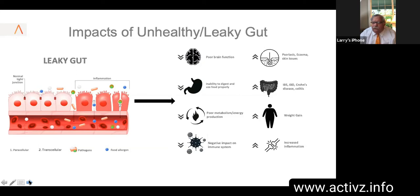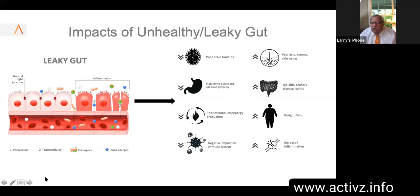We want your cells to look like those on the left of the screen. Leaky gut syndrome causes poor brain function and inability to digest and use food properly. It creates poor metabolism and energy production, leaving you feeling lethargic. It negatively impacts the immune system and can express itself in skin conditions like psoriasis and eczema. Very commonly you'll get IBS, and continued onset can lead to more serious diseases like Crohn's disease and colitis. Weight gain and increased inflammation throughout the body are also associated issues.